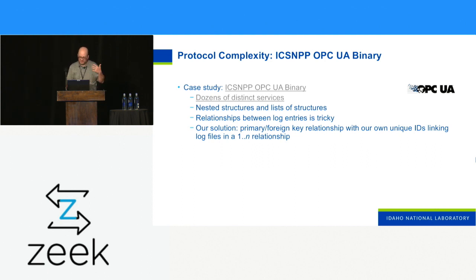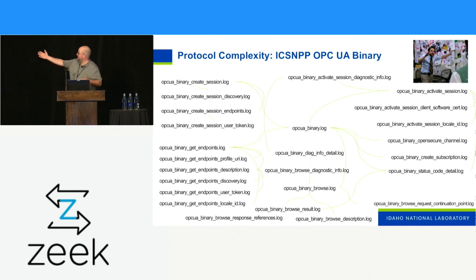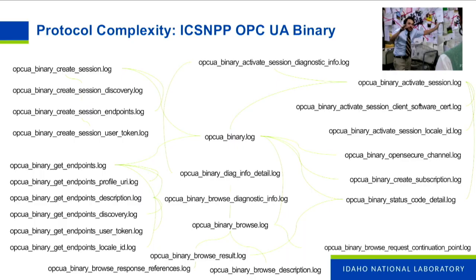It's continually a challenge to figure out the right amount of data and the right amount of normalization versus denormalization. What we ended up with is essentially a star schema — a fact table and dimension tables — where the main OPC UA binary log records what can happen, and subsets like create session logs have their own kind of details. We look at this and we're not sure if we should be proud or ashamed.